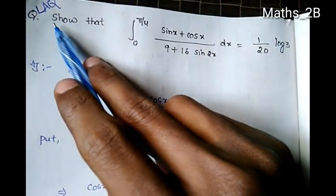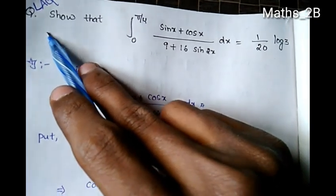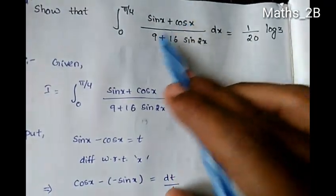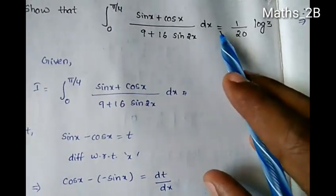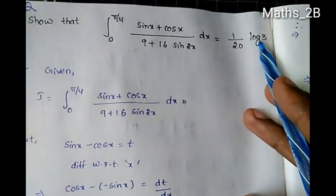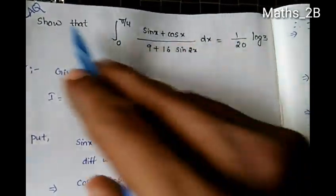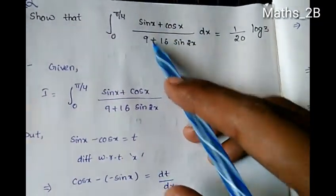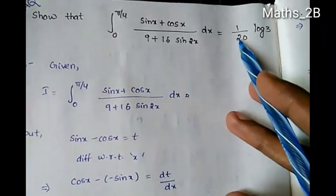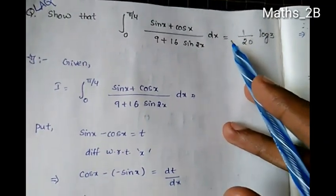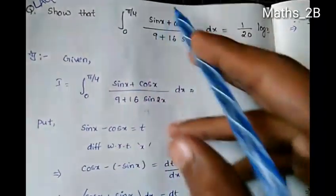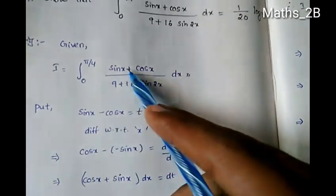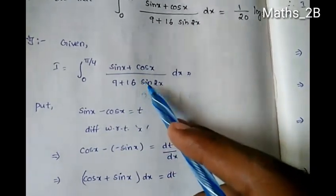Hi friends, in this next video we are going to show that the definite integration from 0 to π/4 of (sin x + cos x) divided by (9 + 16·sin 2x) dx is equal to 1/20 · log 3. So we need to prove this result.